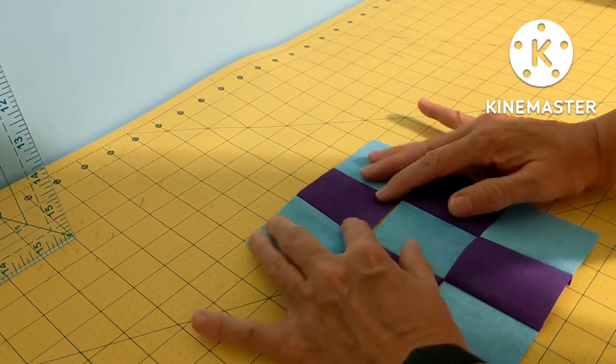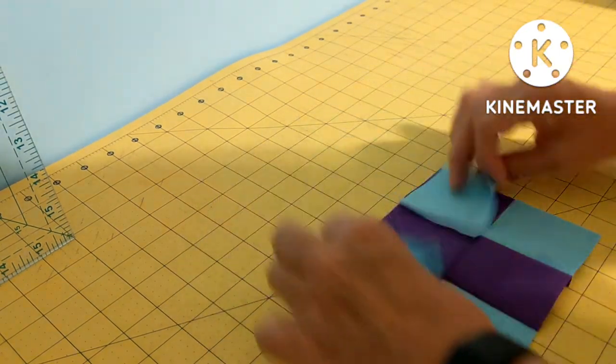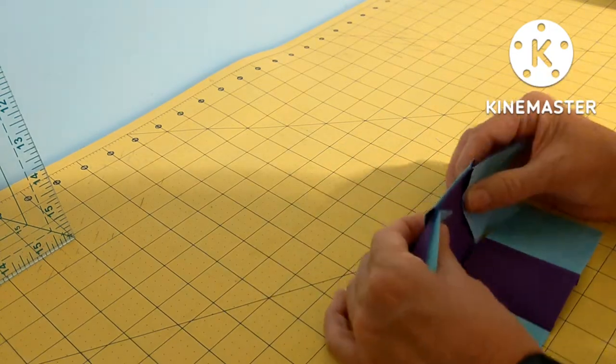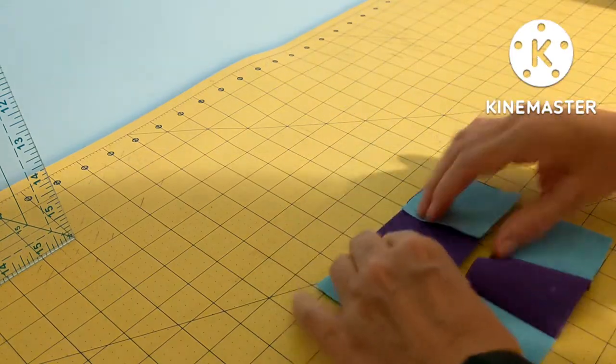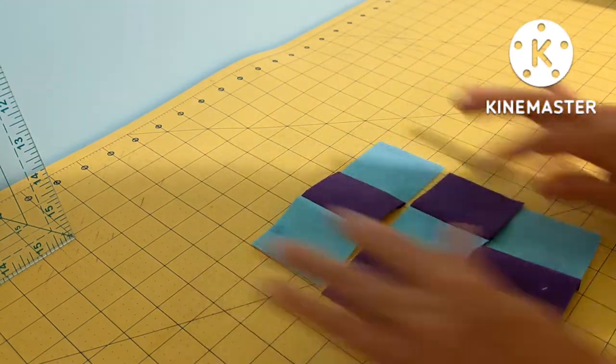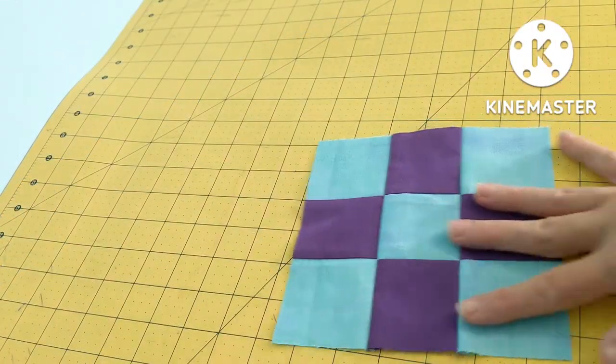So then I just will take these ends. And because I pressed in different directions, I will have nesting seams. So I will just sew this into that three by three grid. Here's our finished nine patch.